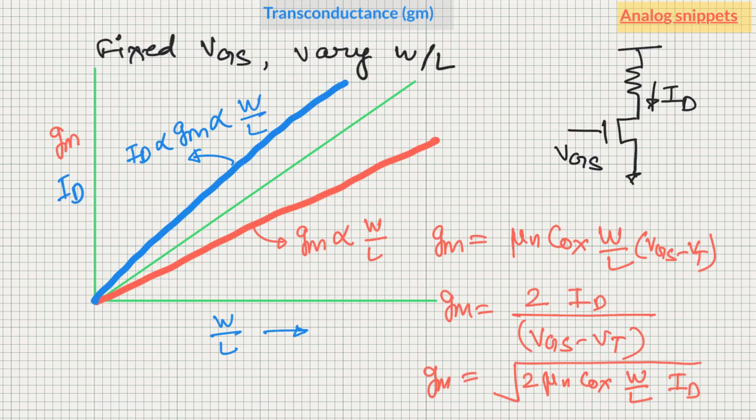Now there is more to this gm story, for example gm of MOS in subthreshold, gm of BJT and how it compares with gm of MOS, gm in velocity saturation region, gm in linear region. But I'm really short of time in this video and I'll make a follow-up video for these advanced topics. So thanks for watching and post your comments below.